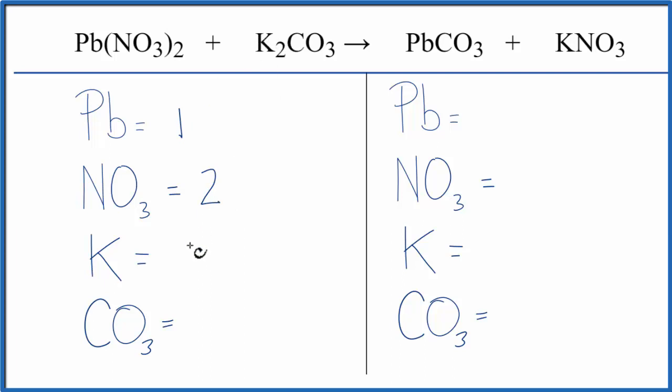Then for potassium, we have 2 of those. And then CO3, that's a carbonate, another polyatomic ion. It's here and it's here, so we're going to count it as one item. We have 1 here.